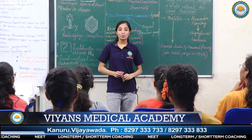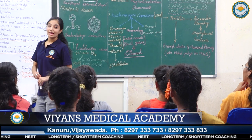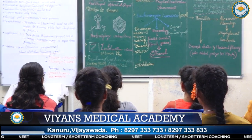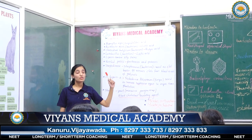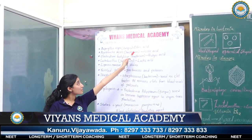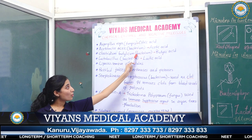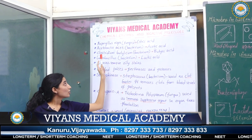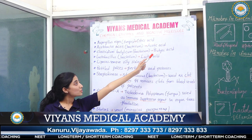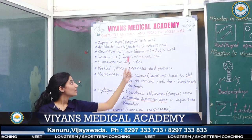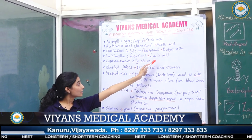Coming to a very important topic — chemicals, enzymes and bioactive molecules. Aspergillus niger is a fungus that produces citric acid. Acetobacter is a bacterium that produces acetic acid. Clostridium butylicum is a bacterium that produces butyric acid. Lactobacillus is a bacterium that produces lactic acid.